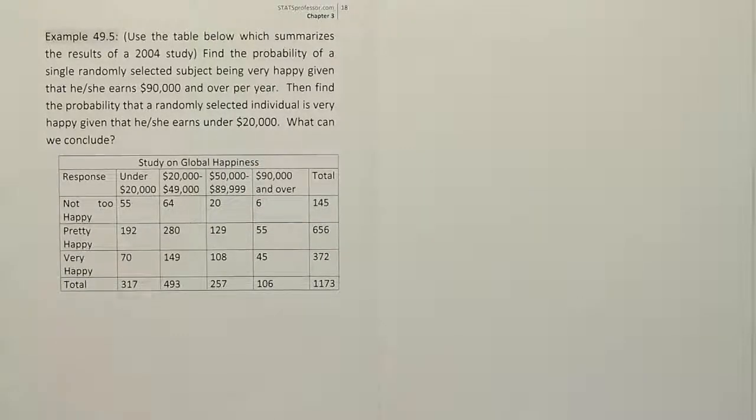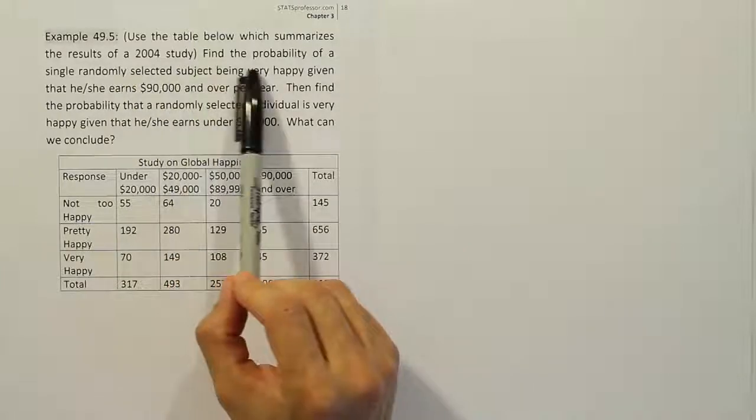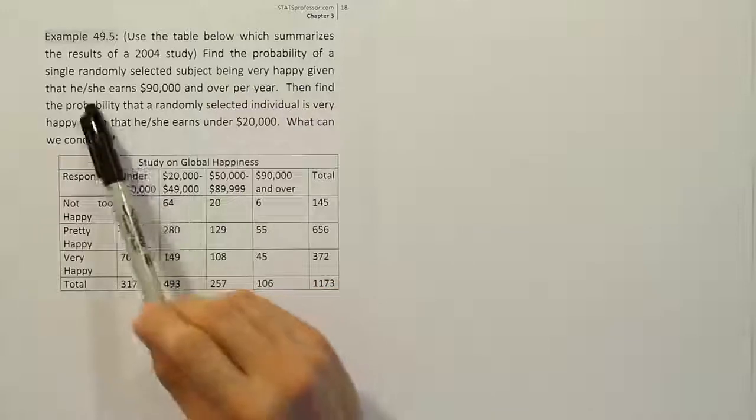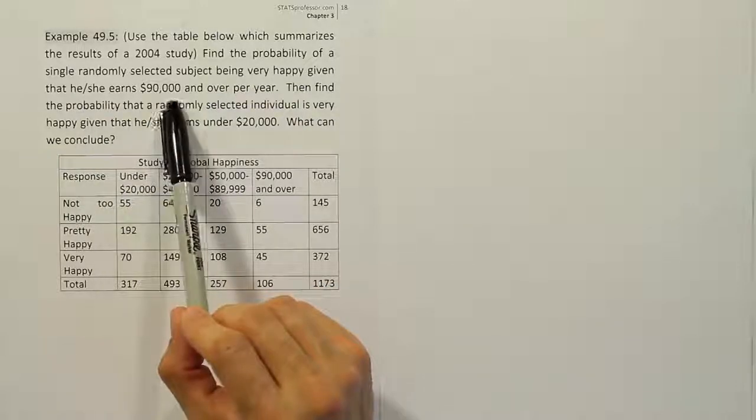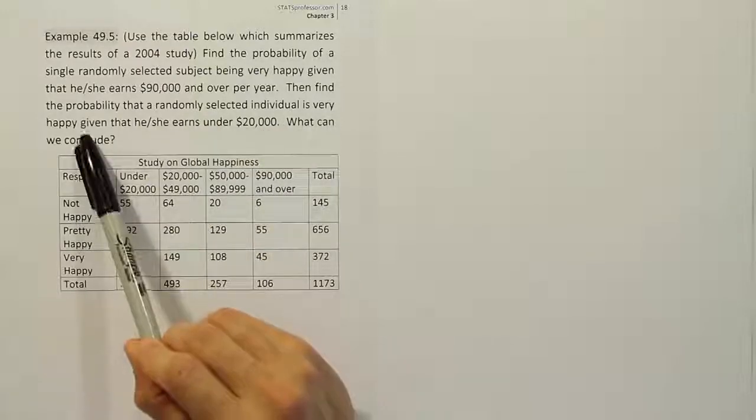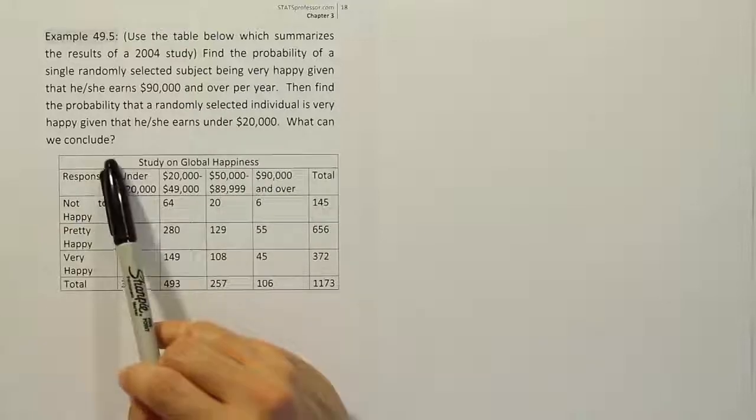Example 49.5. Use the table below which summarizes the results of a 2004 study. Find the probability of a single randomly selected subject being very happy given that he or she earns $90,000 and over per year. Then find the probability that a randomly selected individual is very happy given that he or she earns under $20,000 per year. What can we conclude?